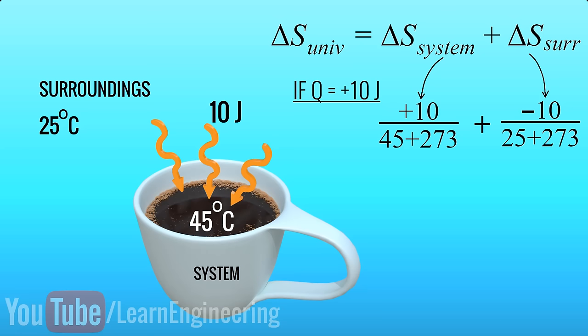If you add these two quantities, you will get the entropy change of the universe. It's a negative quantity in this case. This is impossible due to the second law.